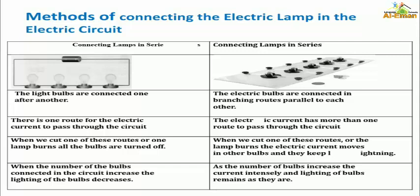The other method of connection is connecting lamps in parallel. The electric bulbs are connected in branching roads, parallel to each other. The electric current has more than one route to pass through the circuit. So when we cut one of these routes or a lamp burns out, the electric current moves through the other bulbs and they keep lighting.